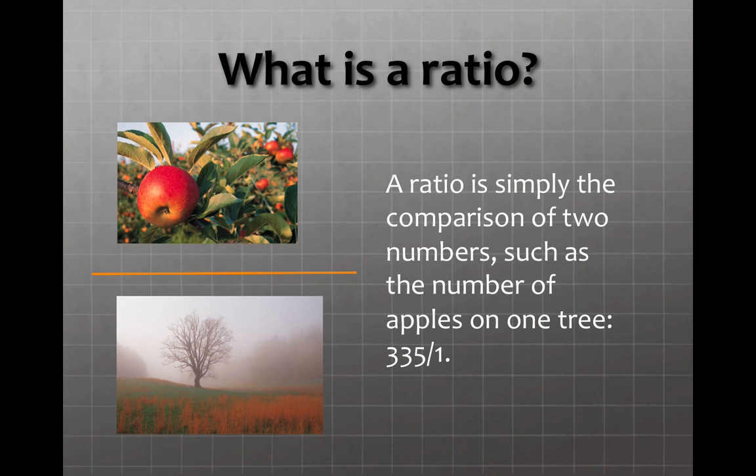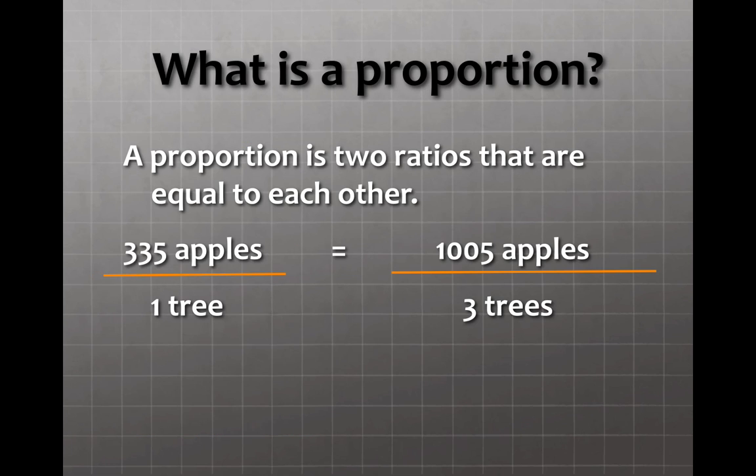A ratio is simply a comparison of two numbers, such as the number of apples on a tree. Let's say for this given variety, there's an average of 335 apples on one tree. That gives us a ratio of 335 to 1. A proportion is taking two ratios that are equal to each other. For example, if there's 335 apples on one tree, we can expect that there's 1005 apples on three trees. These two ratios are equal to each other, and therefore it is a proportion.